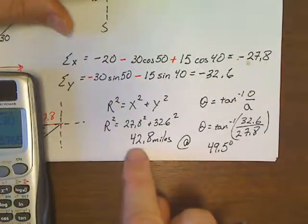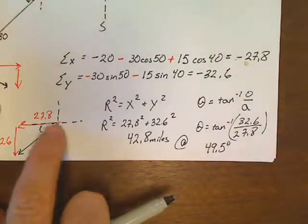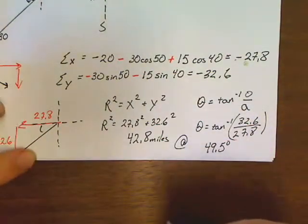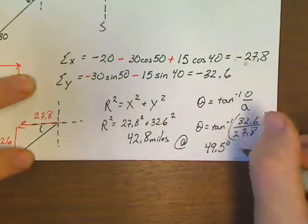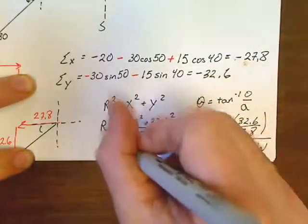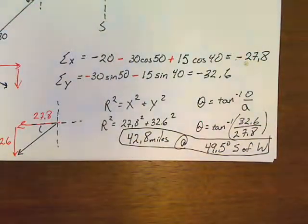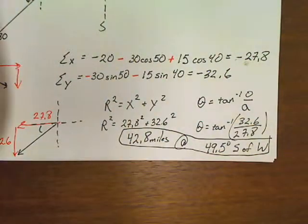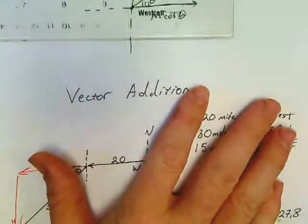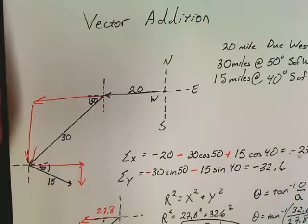So, this is 42.8 miles at 49.5 degrees. And I came south of west in this picture. I am south off of a west line. South of west. And there is my video in 10 minutes and 41 seconds. All right. Thank you for watching. Again, this was just meant as a review video, not as a full-blown vector teaching video. Anyway, hopefully it helps.